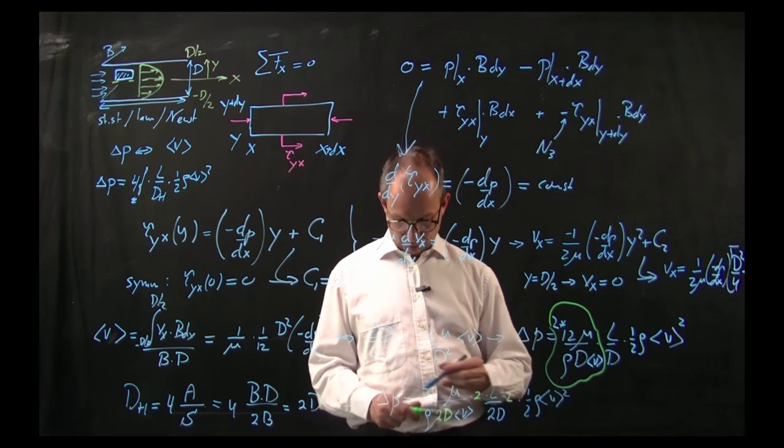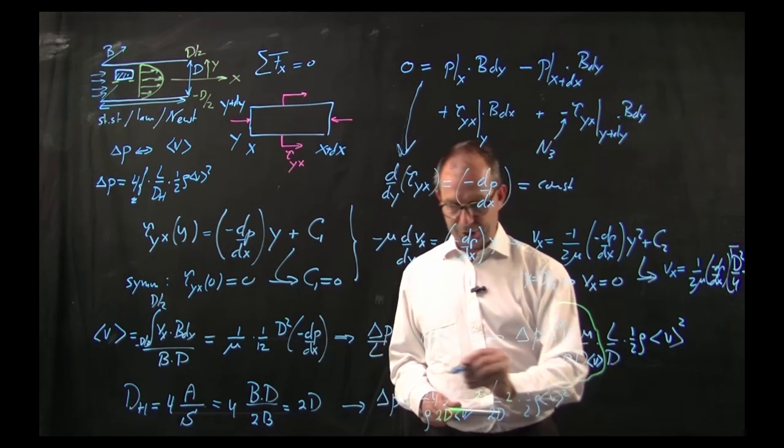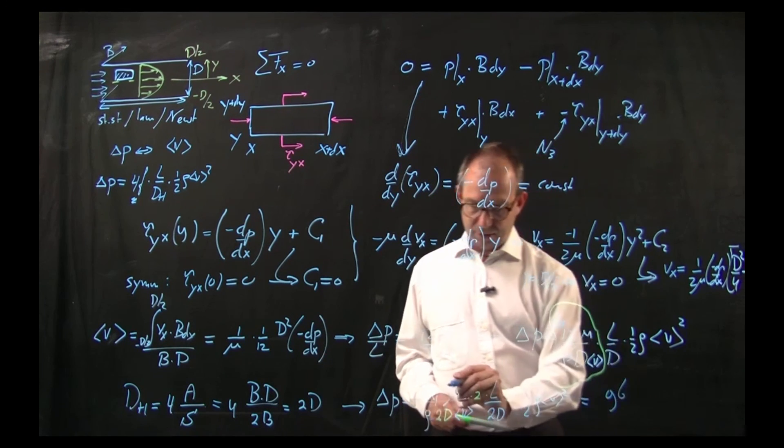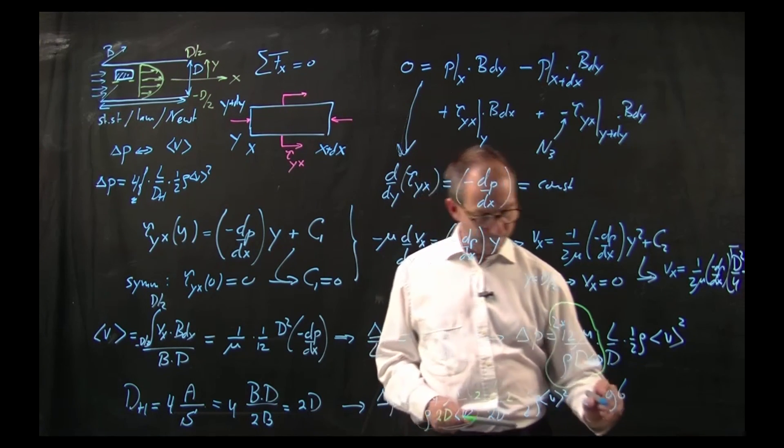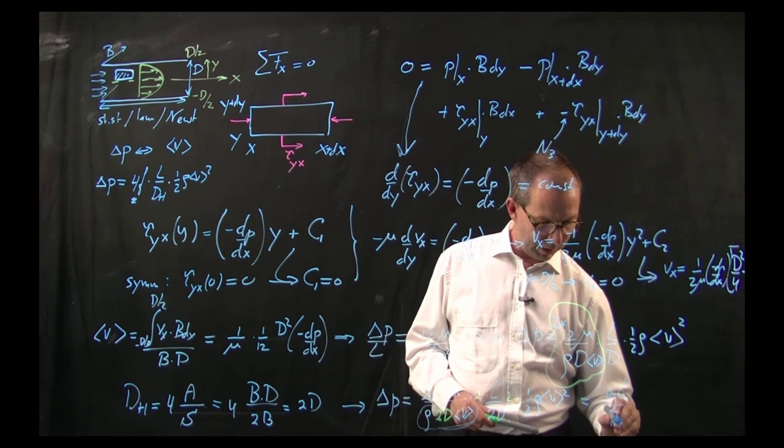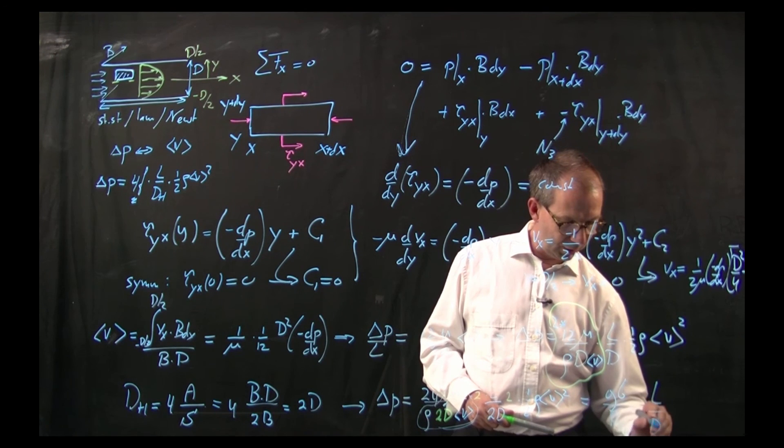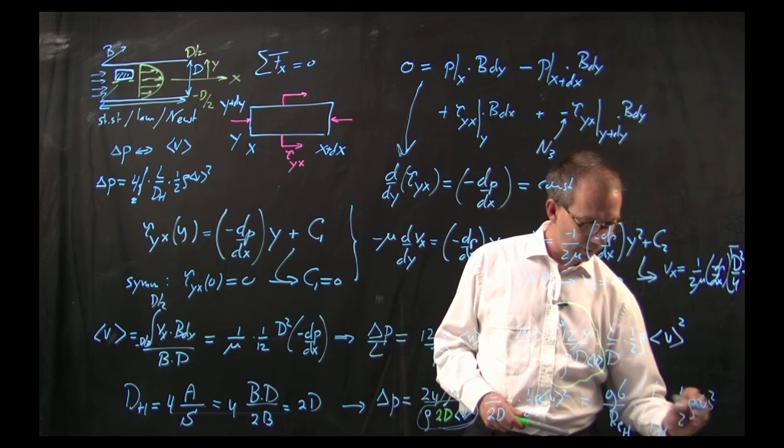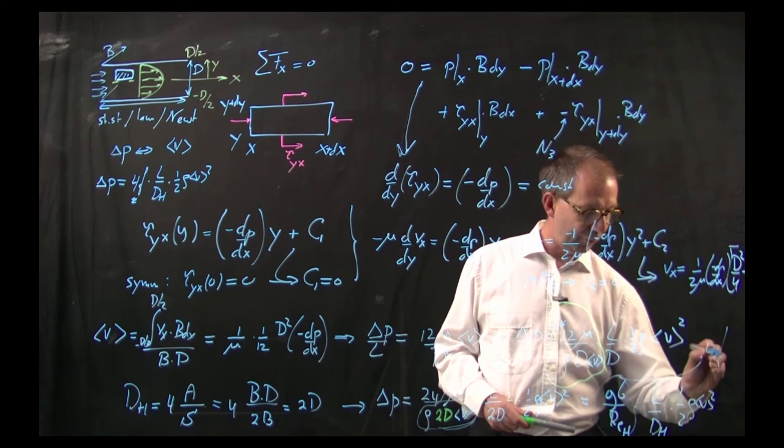And thus if I compute all the numbers, 24 times 2 times 2 is 96 divided by the Reynolds number based on the hydraulic diameter times L over the hydraulic diameter times half rho v squared. And here is your 4f in terms of the hydraulic diameter.